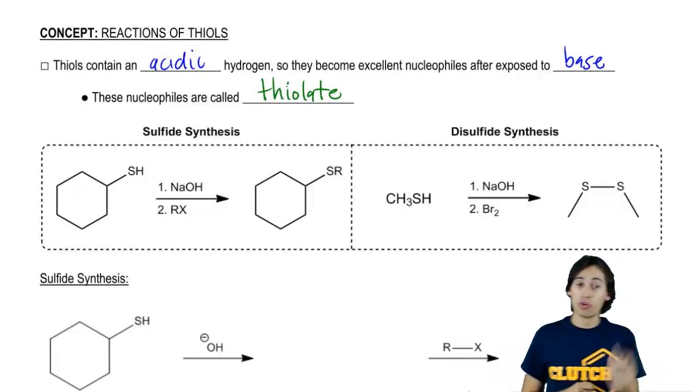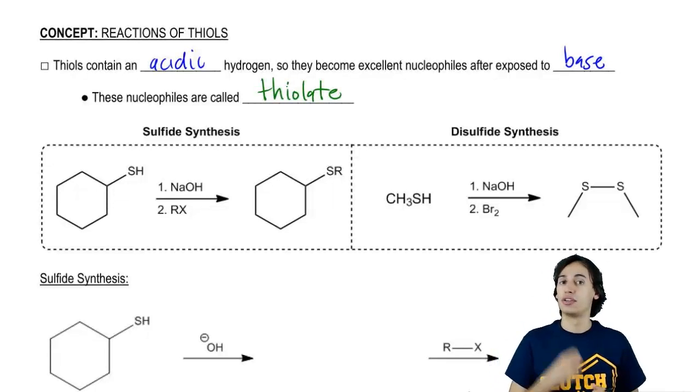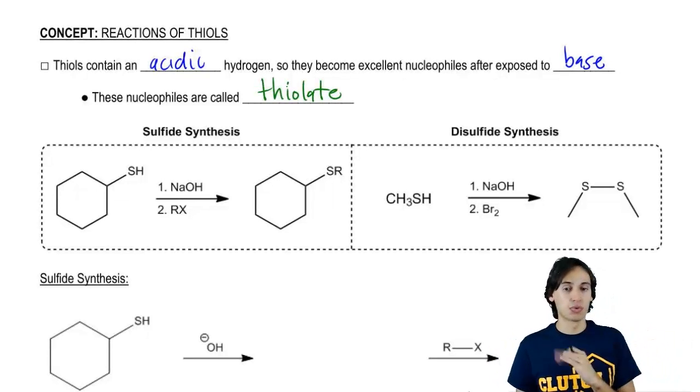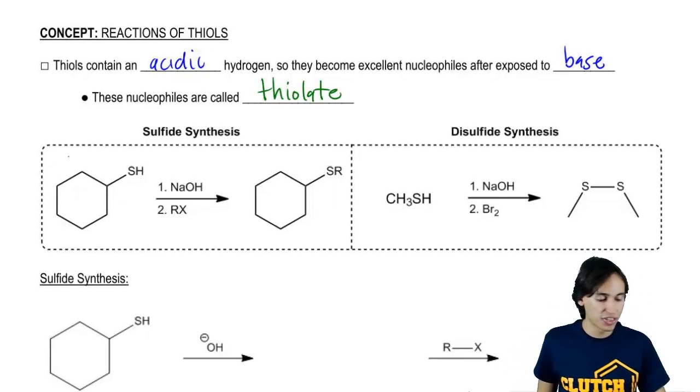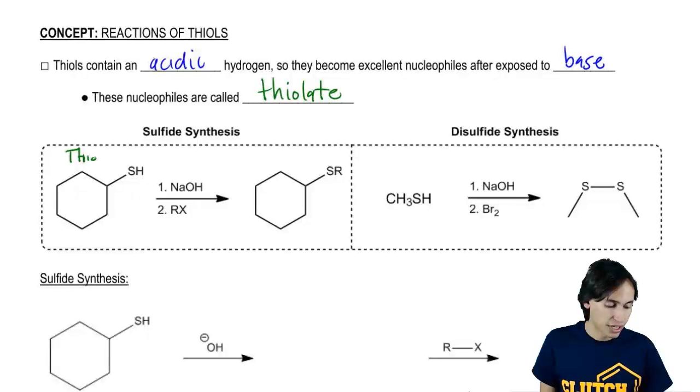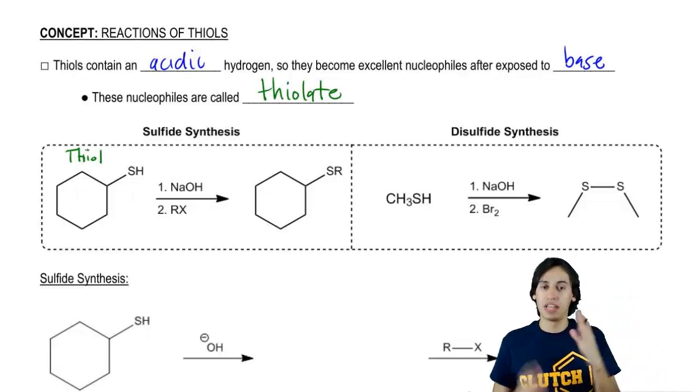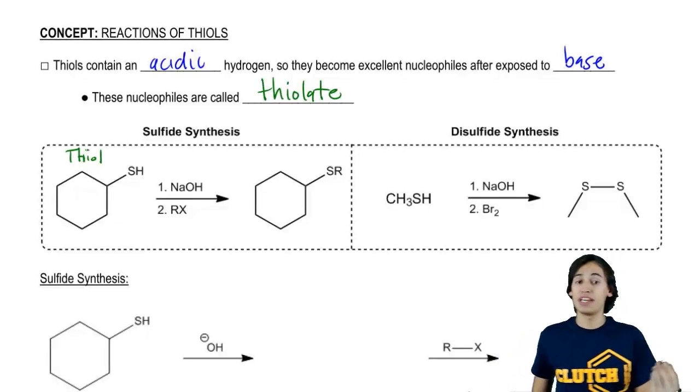So we can do sulfide synthesis through a thiol and we can also do disulfide synthesis. Let's start off with the easier one, which is sulfide synthesis. So in sulfide synthesis, I start off with my thiol. That looks just like an alcohol except it's got the S. And I react it with base.